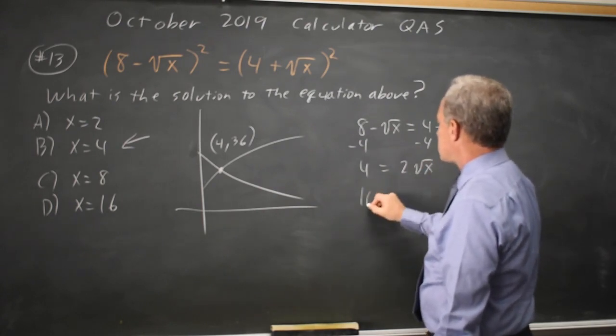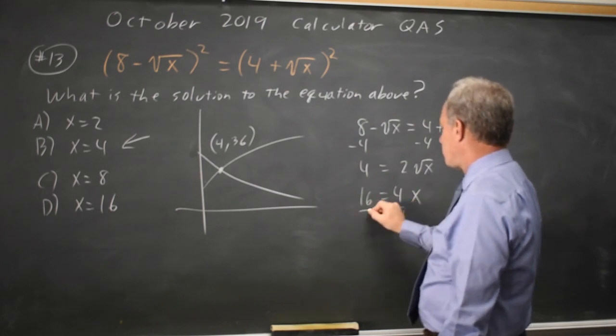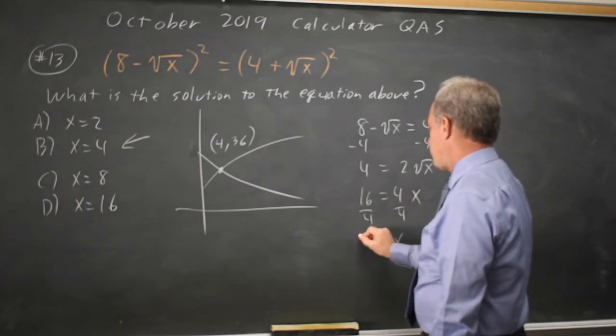Squaring both sides, 16 equals 4x, divided by 4, and x equals 4.